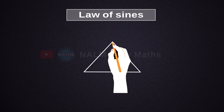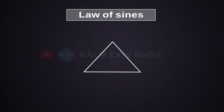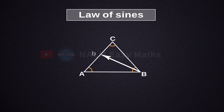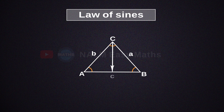We first need to take a triangle. Let the angles of that triangle be A, B, and C. The side opposite to angle B is called B, the side opposite to angle A is called A, and the side opposite to angle C is called C.